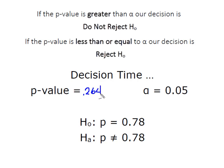Clearly, 0.264 is considerably higher than our alpha of 0.05. Our p-value is greater than alpha, so our decision is do not reject H0.